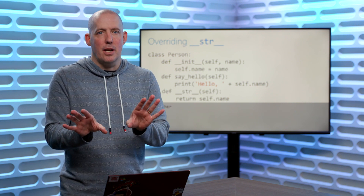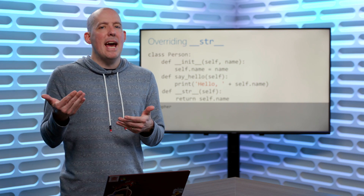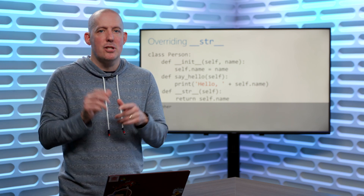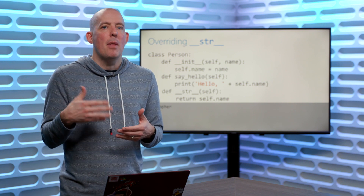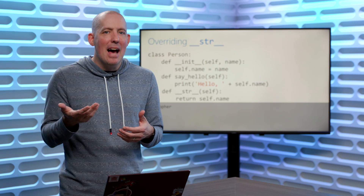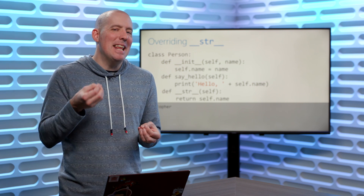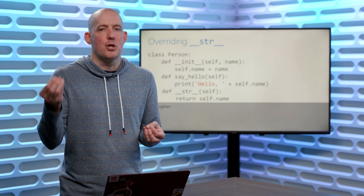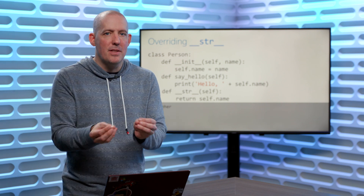So in a nutshell, inheritance is going to create that is-a relationship. We indicate what we want to inherit from by putting the parent class inside parentheses. We can always override functions, including the ones from that base object. We can always add on our functionality, and if there's anything from that parent class we need, we can grab that from super. Let's go ahead and take a look at a demo to help bring all of this together.